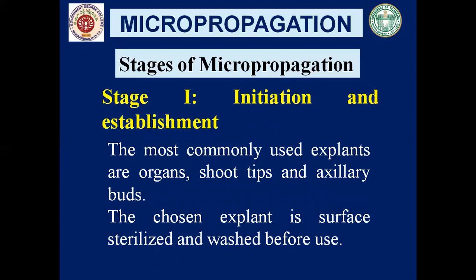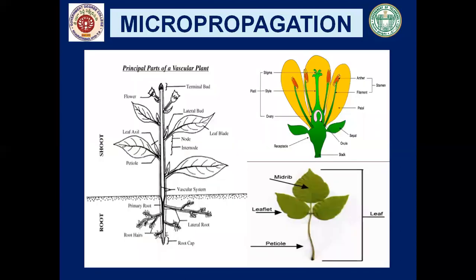The most commonly used explants are organs — any plant organ, shoot tips, and axillary buds. The chosen explant should be surface sterilized and washed before use to get rid of microorganisms. From a flower, we can take an anther, a stamen, the ovule, or the ovary as an explant. Any part of a leaf can also be used as an explant.